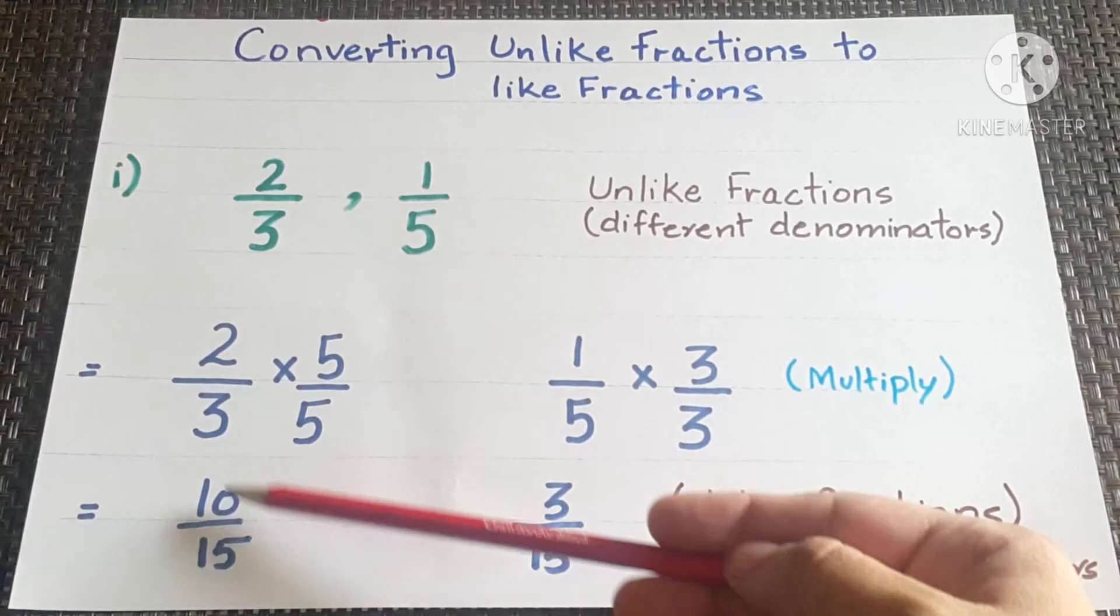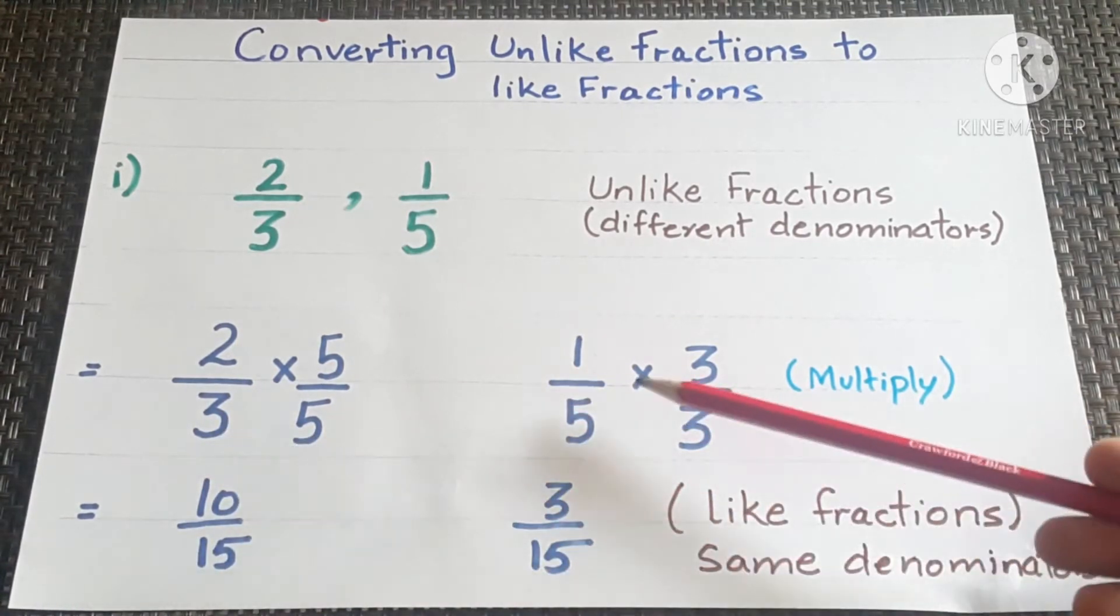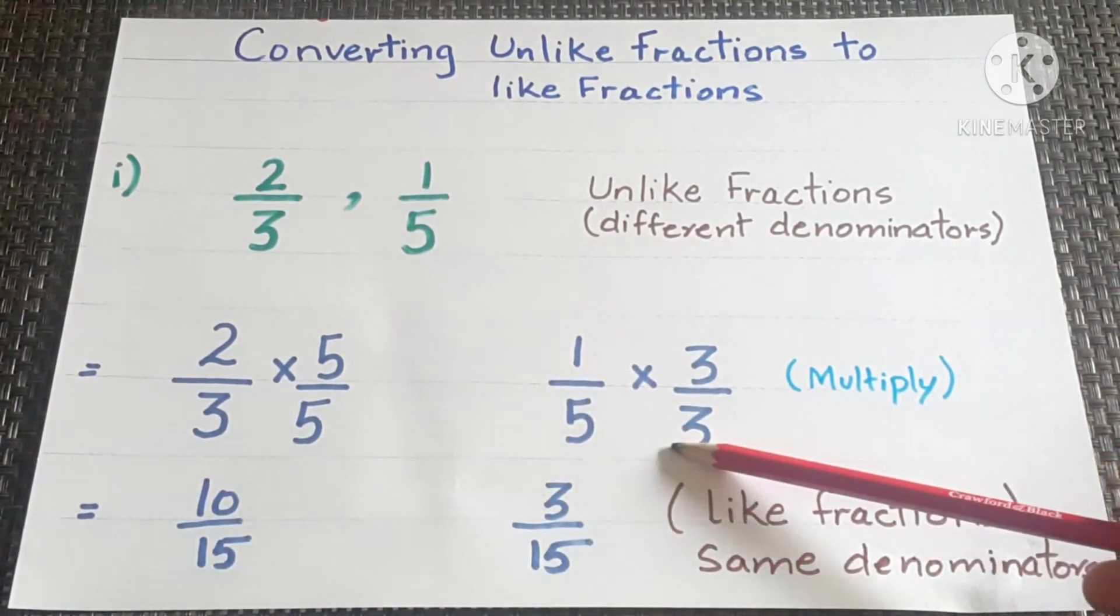2 times 5 is 10, 3 times 5 is 15, 1 times 3 is 3 and 3 times 5 is 15.